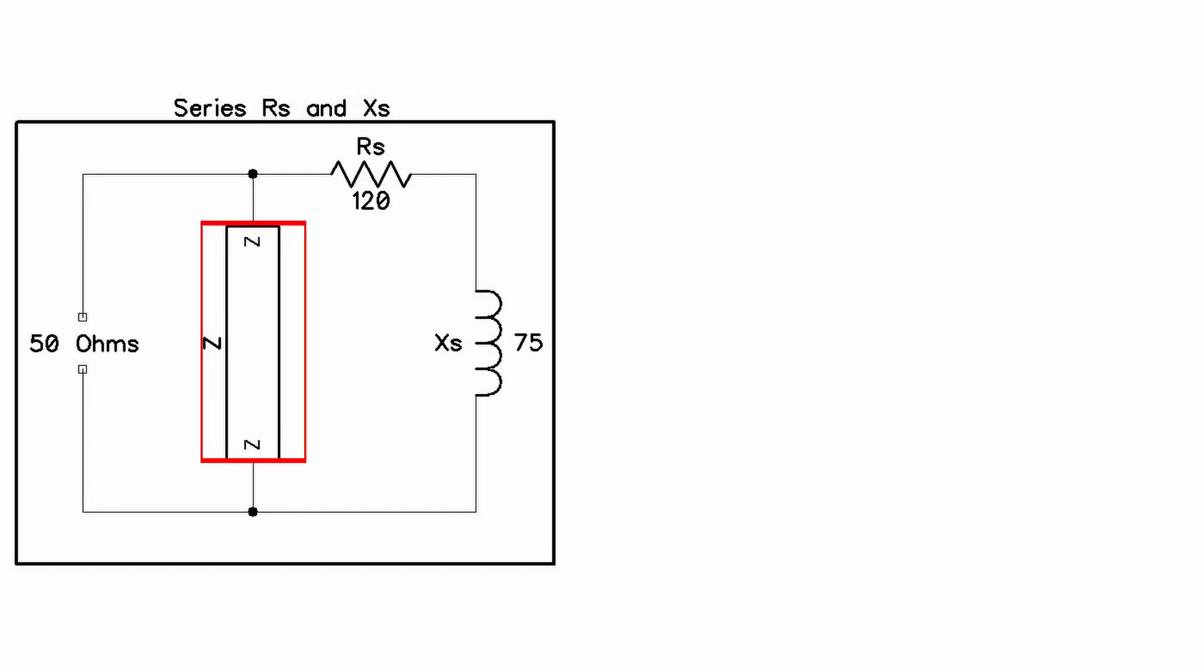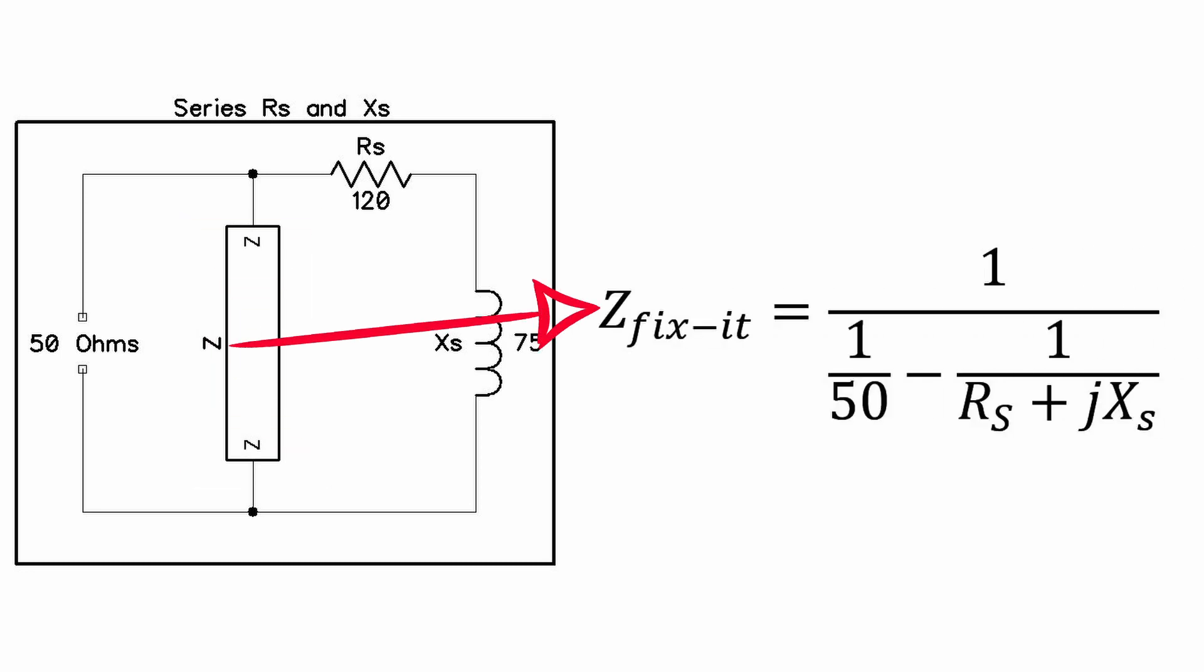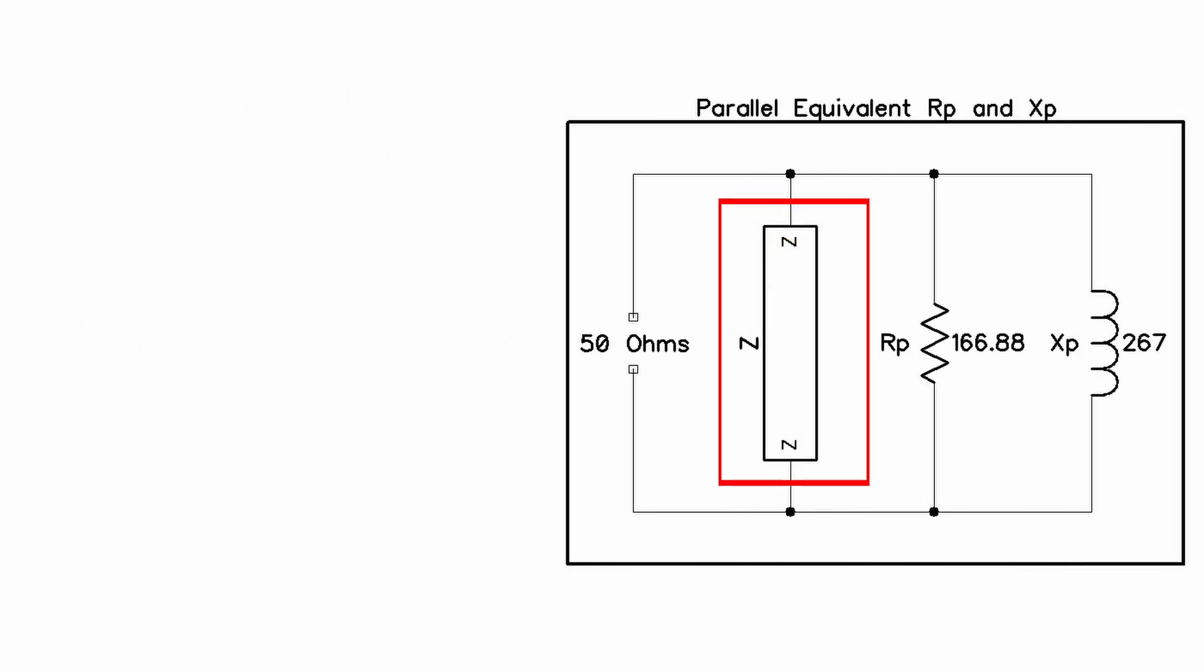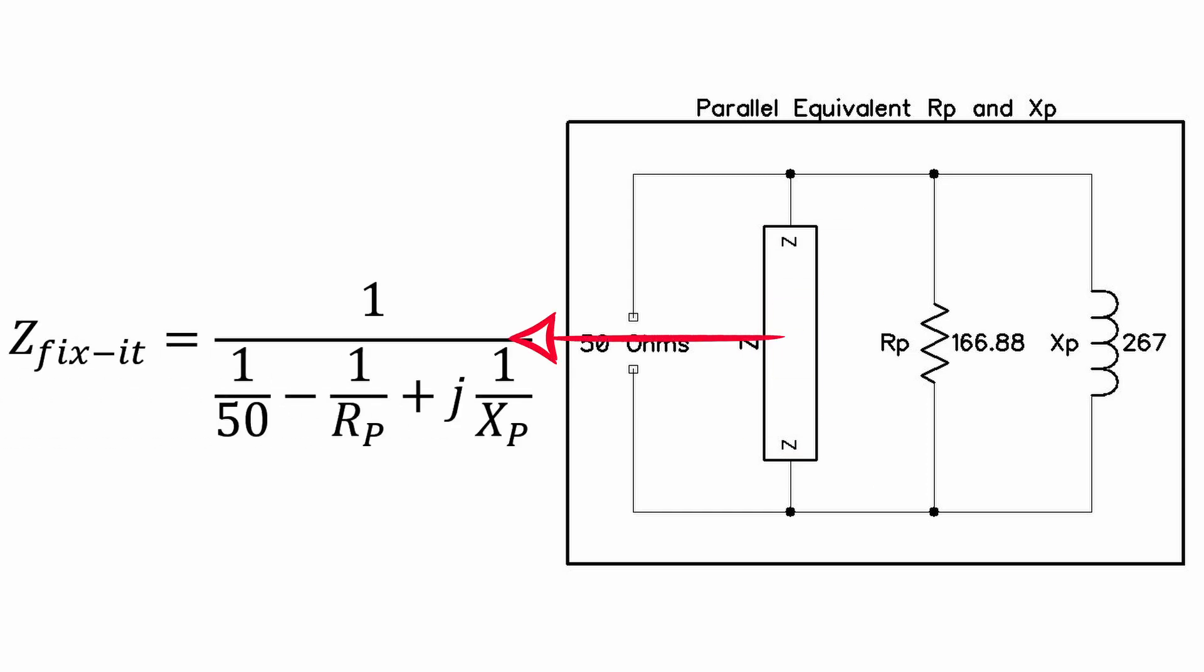We can view this in one of two ways. We can see this in terms of some impedance in parallel with the measured series impedance of RS plus JXS. This would give us a fixed impedance of 1 divided by 1 over 50 minus 1 over RS plus JXS. You could also see this in terms of some impedance in parallel with the parallel resistance RP and the parallel reactants XP. This gives us a fixed impedance of 1 divided by 1 over 50 minus 1 over RP plus J1 over XP.